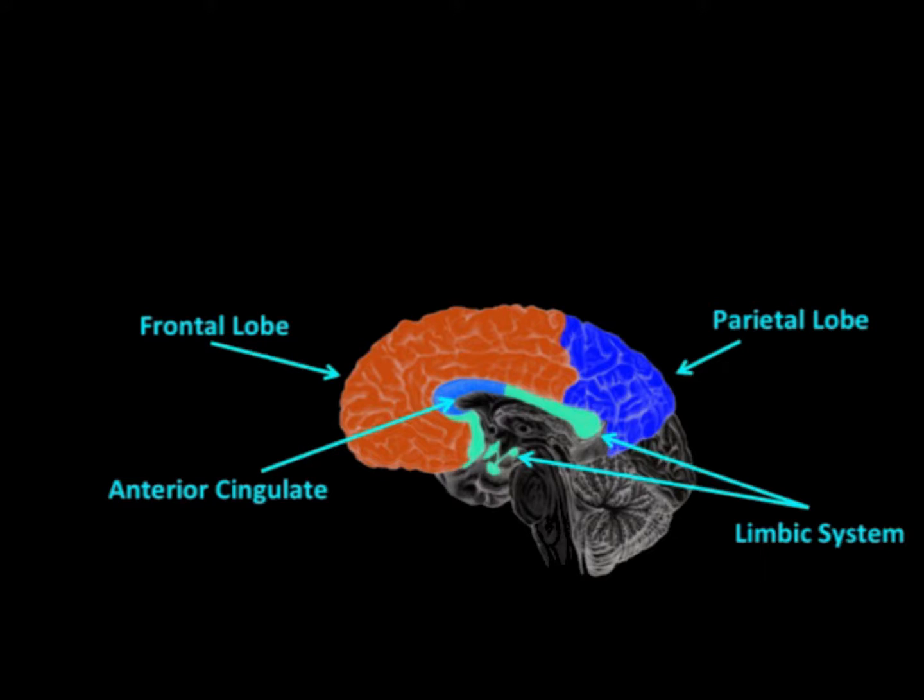Number two: Anterior cingulate is the part that is activated when we feel empathy and compassion for others. Dr. Newberg calls it our neurological heart. Prayer and meditation activates that part of the brain, which helps you feel compassion for others and the loving connection to all life, God. This has many helpful healthy benefits.